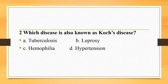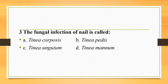The next question is: which disease is also known as Coats disease? The answer is tuberculosis. Leprosy is also known as Hansen's disease. Hemophilia is also known as the disease of the royal family, and hypertension is also known as the disease of the higher class.